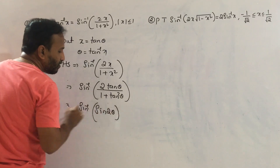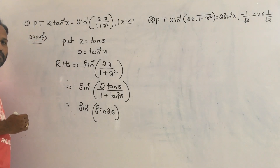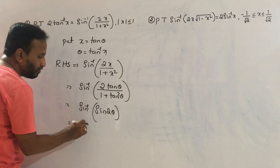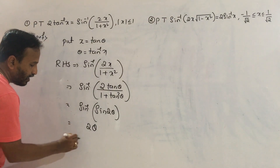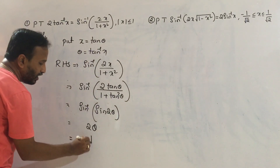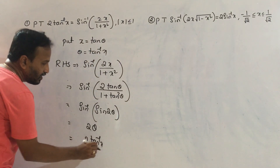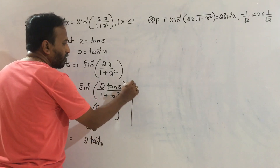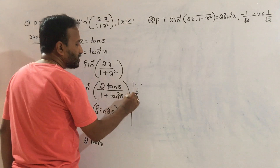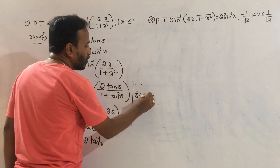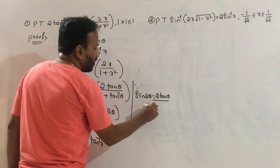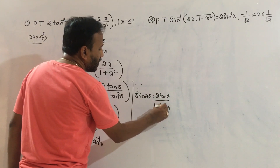Here we use the sub-multiple formula: sin inverse of sin 2 theta equals 2 theta. So we get 2 theta, and since theta is tan inverse x, this equals 2 tan inverse x. The formula used is: sin 2 theta equal to 2 tan theta divided by 1 plus tan squared theta.